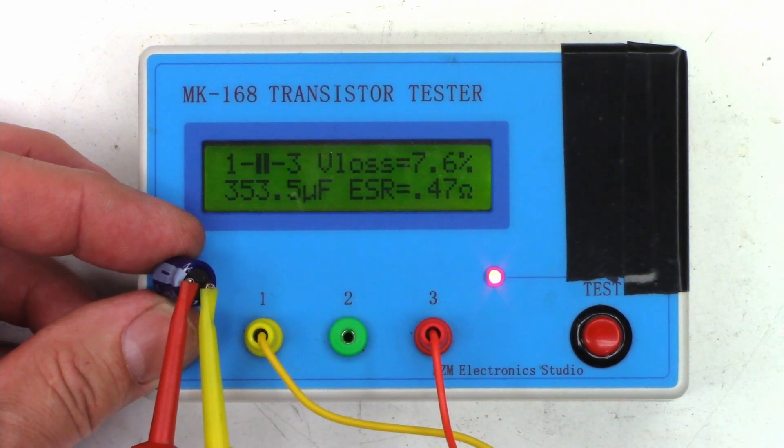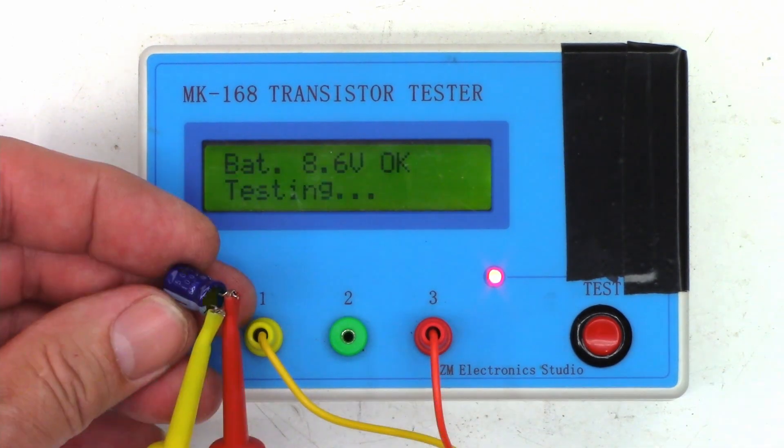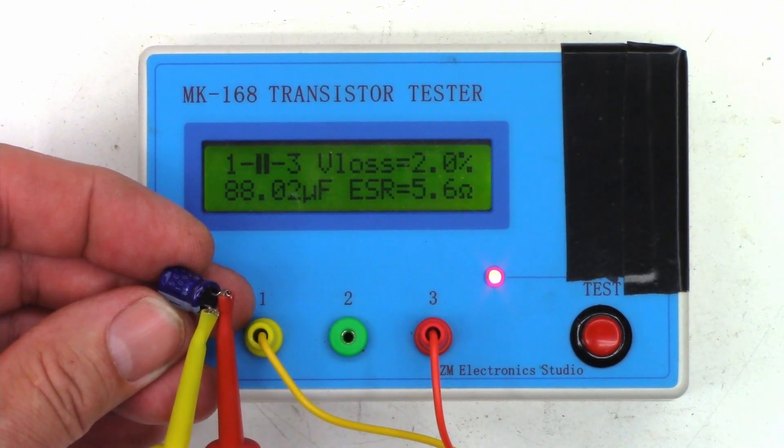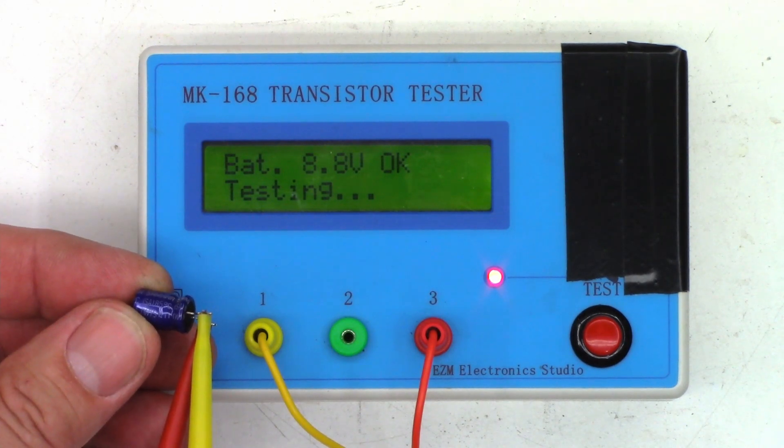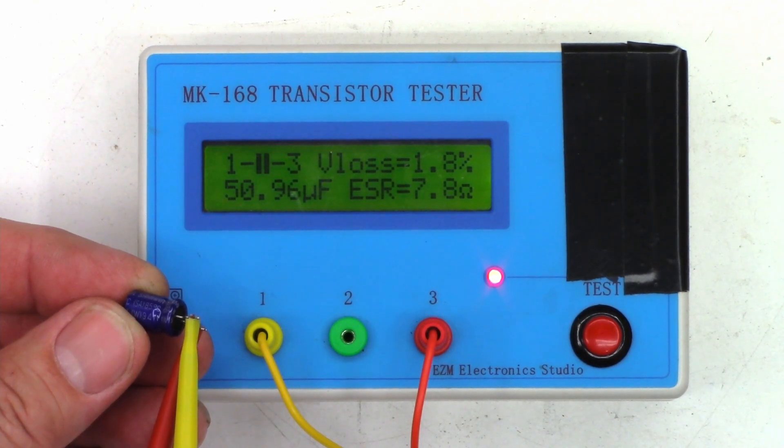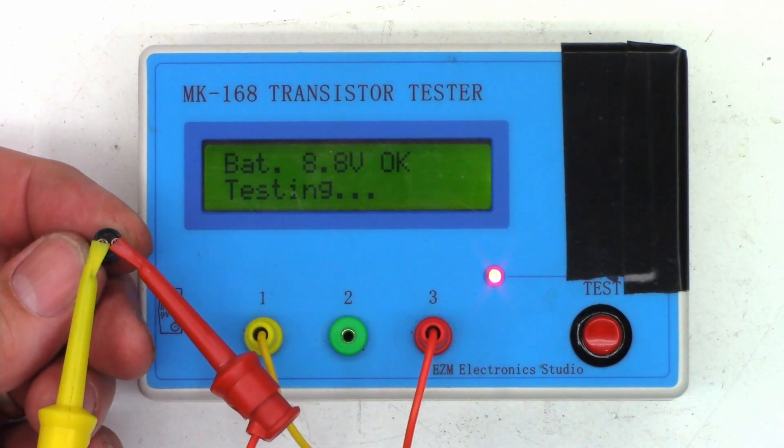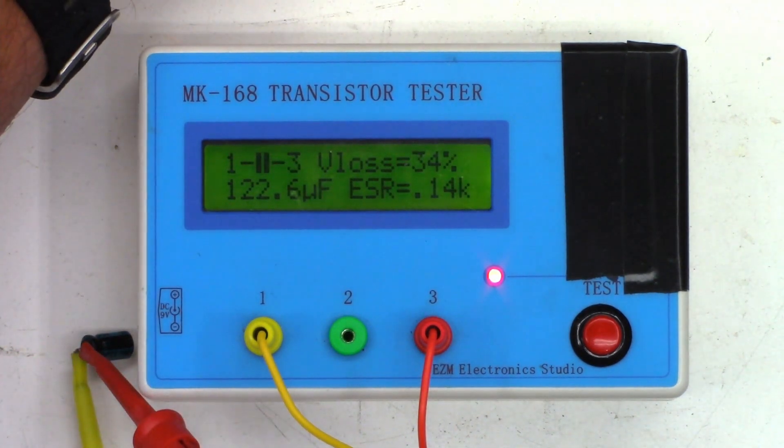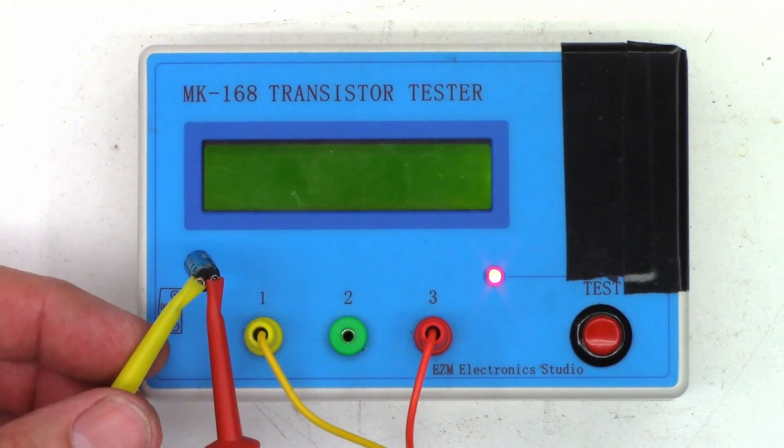Number four, the 4700 at 6.3 volts: 5700 microfarads, an ESR of 0.06, and a V loss 2.6. On to the Samwa 470 at 16 volts: 353 microfarads, ESR of 0.47 ohms, and a V loss of 7.6 percent. On to the 100 at 50 Samwa: 88 microfarads, 5.6 ohms, and a V loss of two percent. Now on to the Samwa 47 at 50, and we see 50 microfarads, 7.8 ohms, and 1.8 V loss.